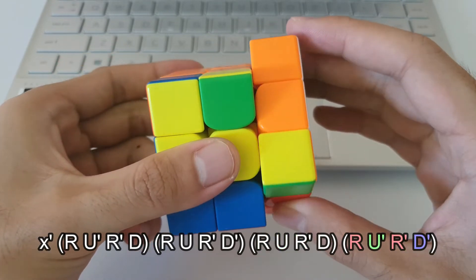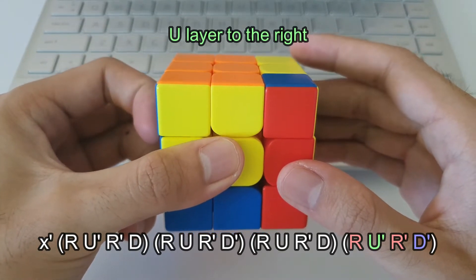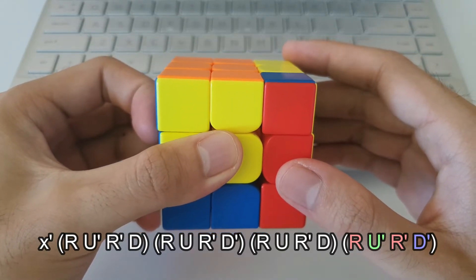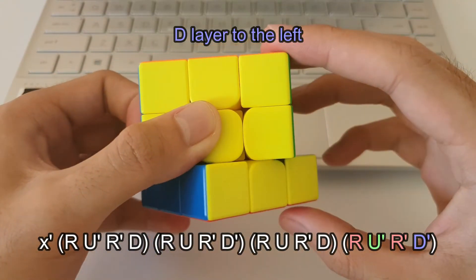Finally, we got the R followed by U prime which means that the U layer is moving back towards the right, and then the final two moves, R prime and D prime which means that the bottom layer is going towards the left.